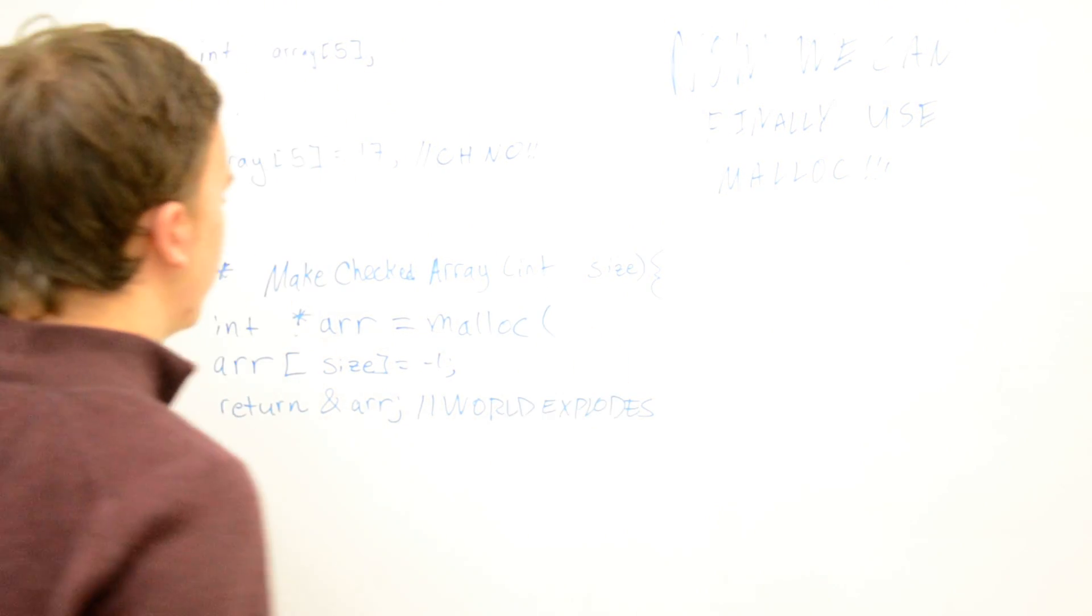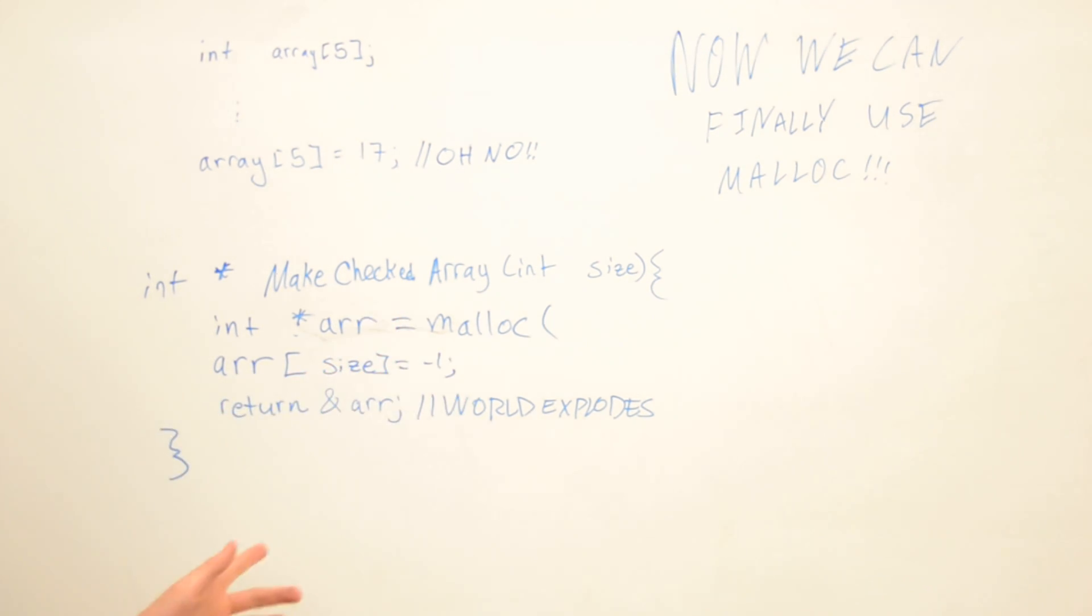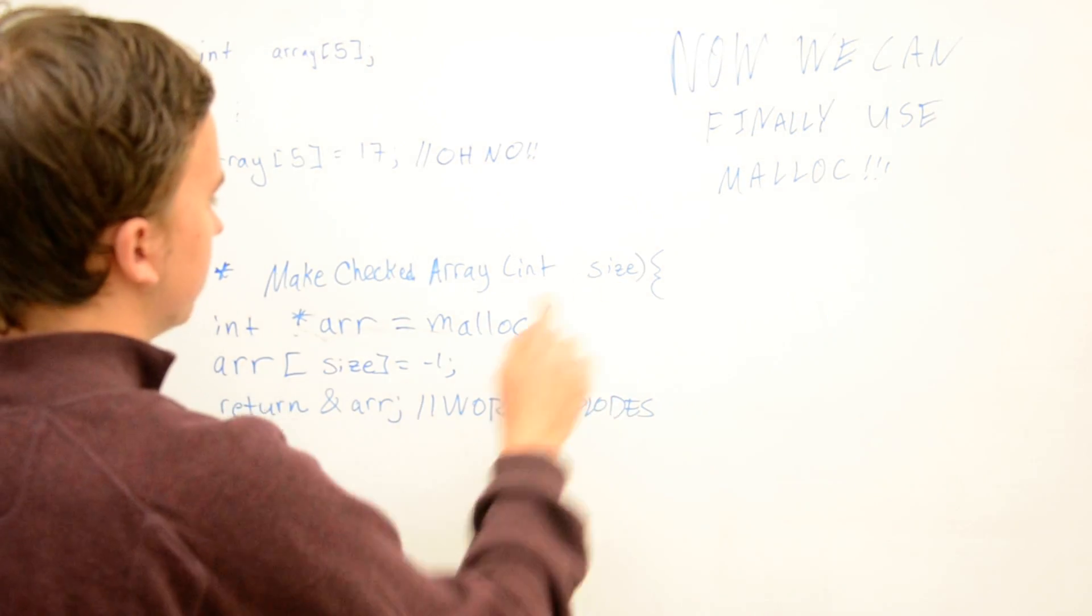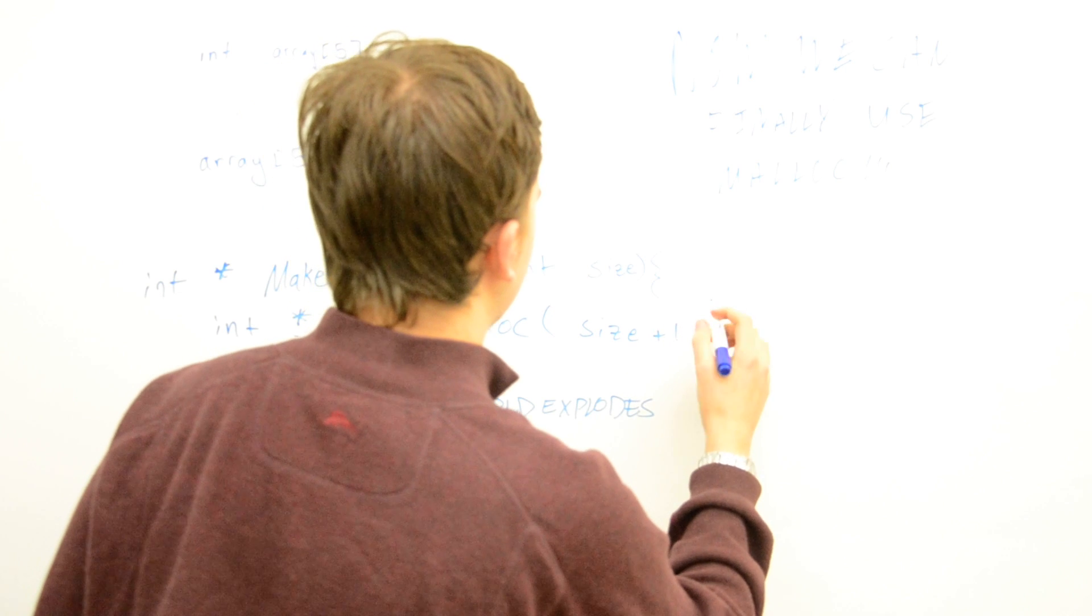Now we want malloc to go and create a chunk of memory out in the heap. And we want that chunk of memory to be size plus one. So we do something like size plus one. But we're not done yet,